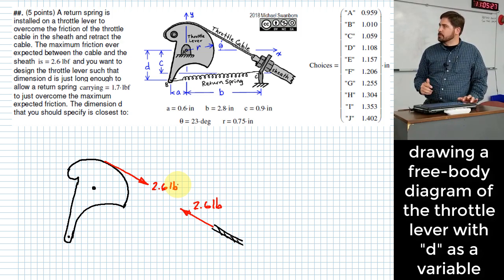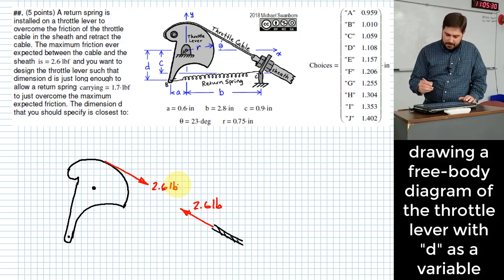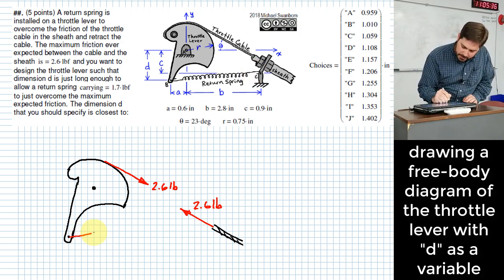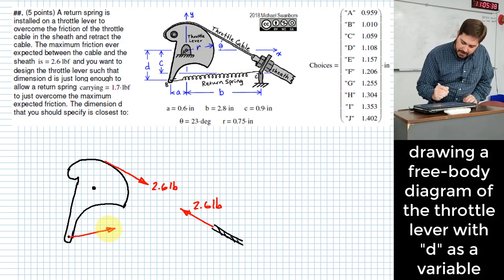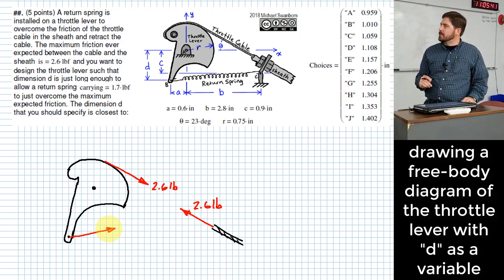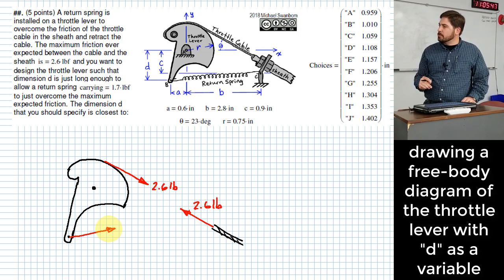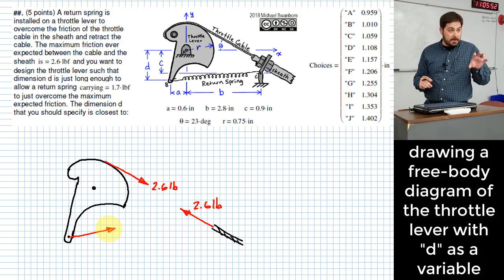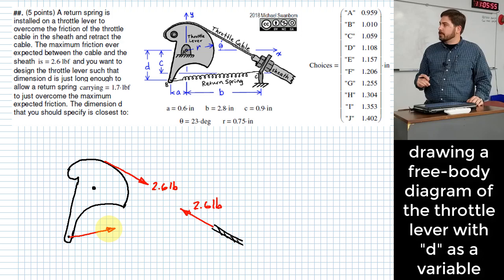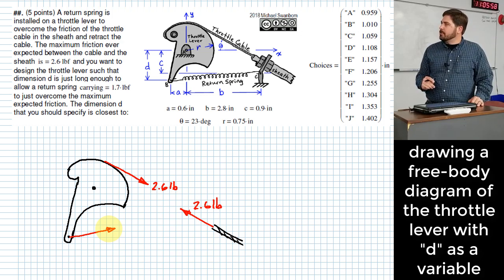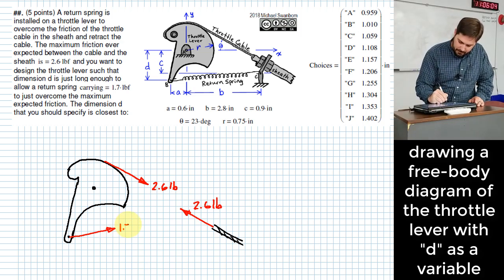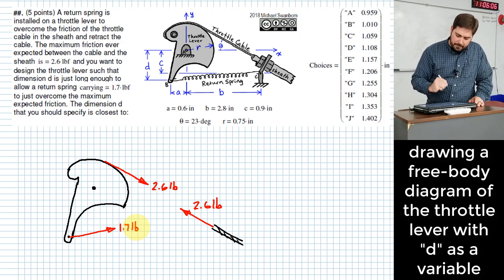What else should we do? What other forces are applied to the throttle lever? Okay. We've got this force in the spring and this spring is going to be carrying a tensile force. So I'm going to show it again as a tensile force applied to that lever by the same logic I used on my little return cable. That force should be pulling toward the connection point of the return spring, right? And that's the effect that the spring causes on the throttle lever. Okay. Do I know the value of that force? Okay. 1.7 pounds.